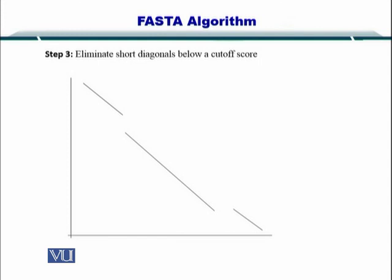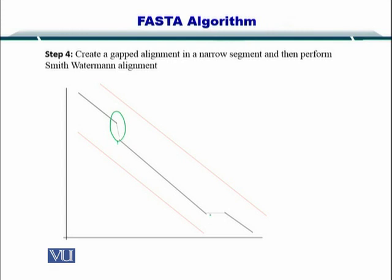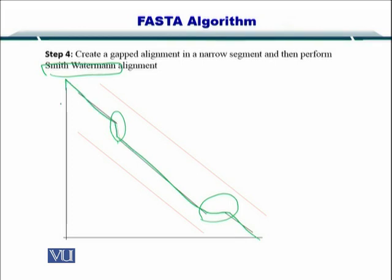How do we do that? By removing the shorter diagonals and setting a cutoff score. So in the end, you only have a very clean set of diagonals, and then you join them using the Smith-Waterman algorithm. And then you have a very nice alignment to finish the job.